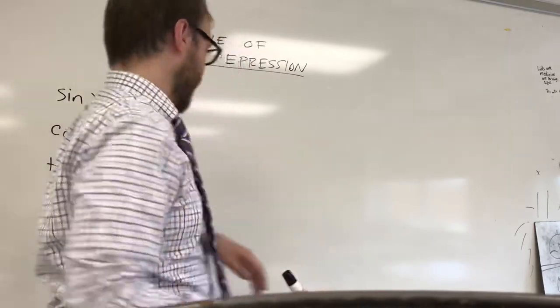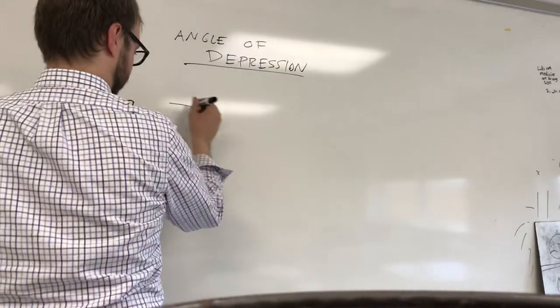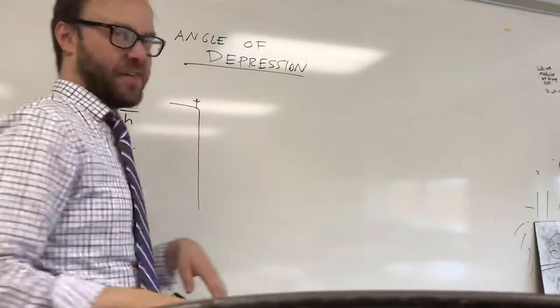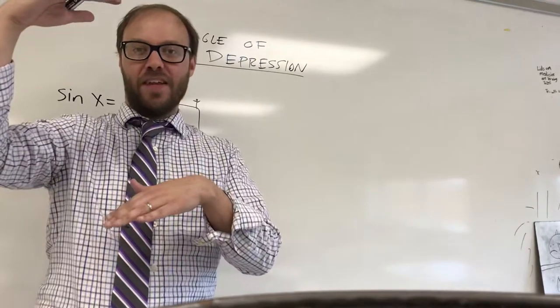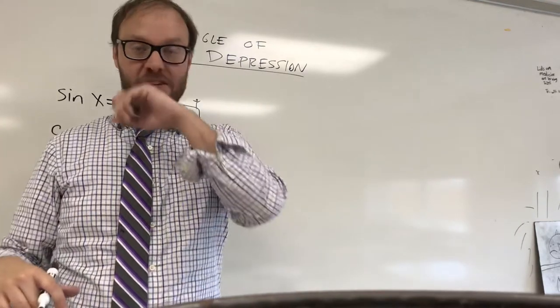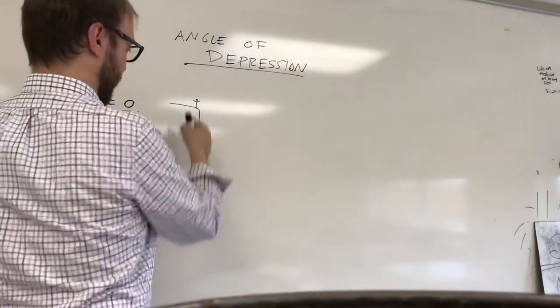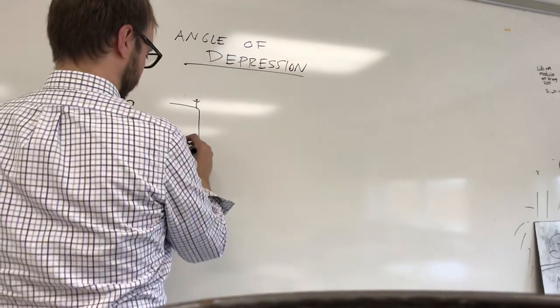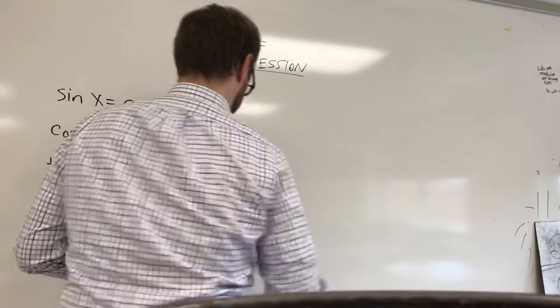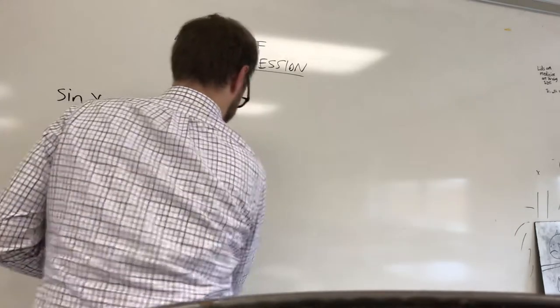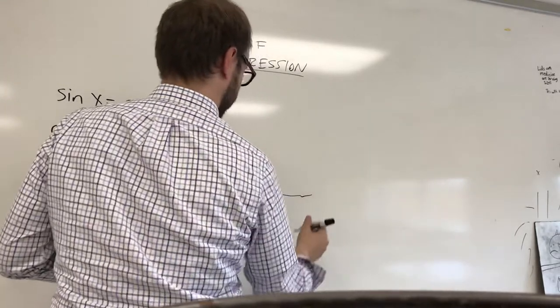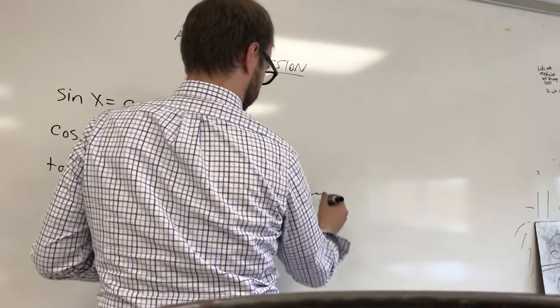Your typical type of problem is going to be something like somebody standing on a cliff. Watch where their head level is. Sometimes they'll give you the height of the cliff and the person's six feet tall and you have to add that on. Sometimes you just assume that measurements are being made from the top. But let's say we're on a 500 foot cliff, and there's an ocean down here.